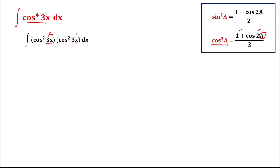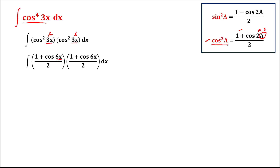Using this identity, cosine squared of 3x equals 1 plus cosine of 2 times 3x, which is 1 plus cosine 6x, over 2. We then multiply the two denominators together: 2 times 2 equals 4, so this factor of 4 goes outside as 1 over 4.